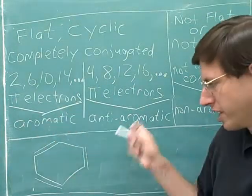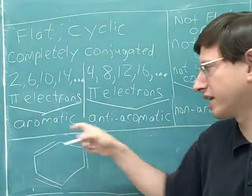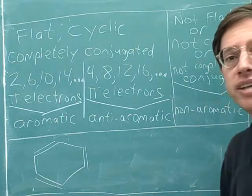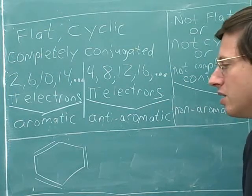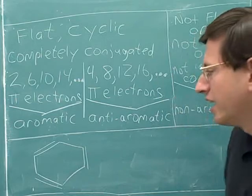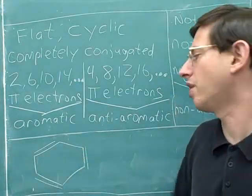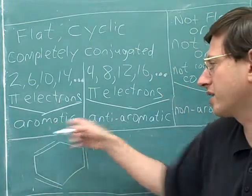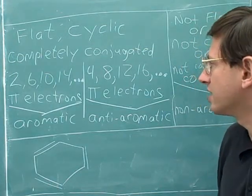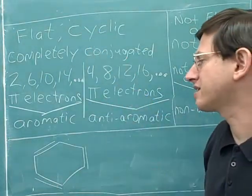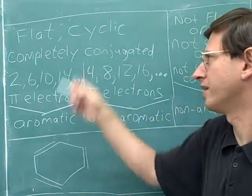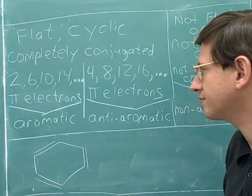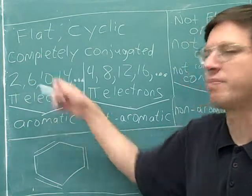Let's decide which of these three categories this molecule falls into: aromatic, anti-aromatic, or non-aromatic. Is it completely conjugated? Yes — all of the atoms are sp2 hybridized, so they all have p-orbitals at every atom in the ring. So it's completely conjugated, meaning we're either in the aromatic or anti-aromatic situation. The molecule is cyclic, and we'll assume all cyclic compounds we're looking at are flat. Now we have to count how many pi electrons there are.